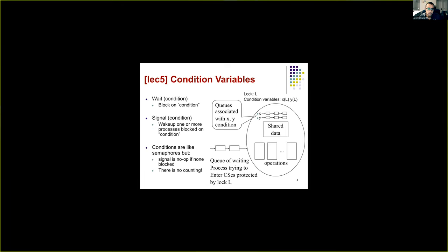We also looked at condition variables. Condition variables are similar to mutexes and locks, where for each condition variable there is a queue which holds all the processes that are blocked on that condition variable. A condition variable is used to block on a certain condition — processes may want to wait until a certain condition is satisfied. Those processes can enroll themselves into the queue of waiting processes, and signal is a function used to indicate that the condition has occurred. When the signal happens, the operating system picks one or more processes from the waiting queue and puts them into the ready state so they can execute when the CPU becomes available.